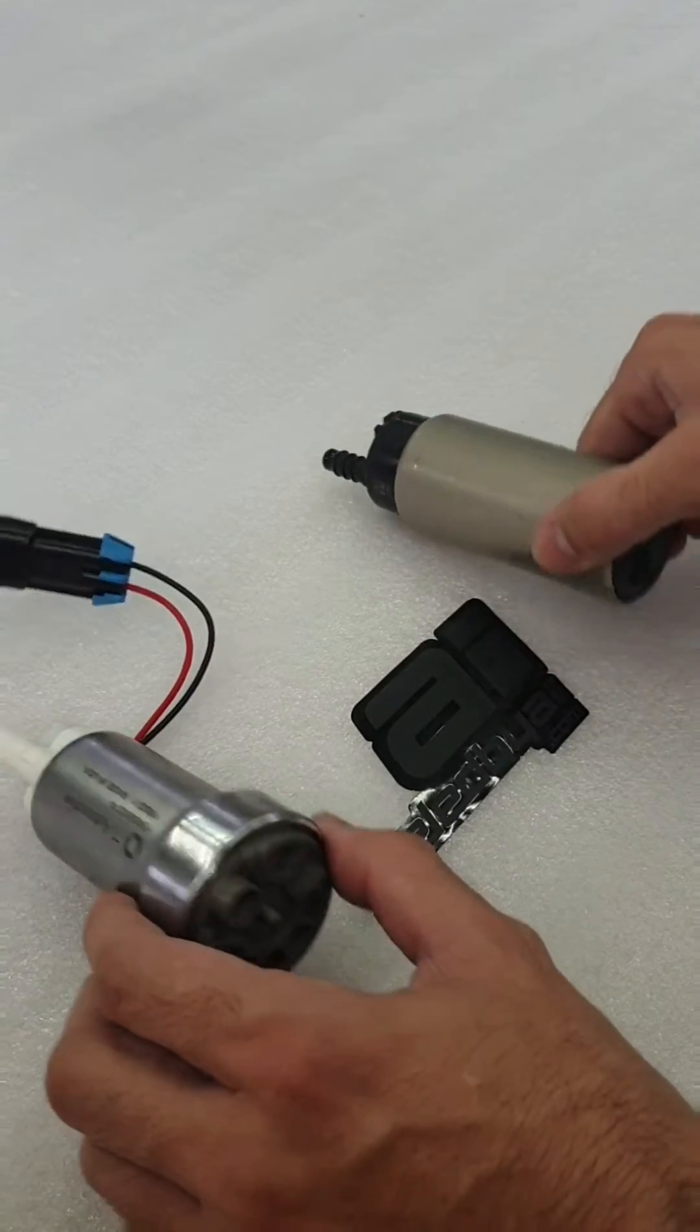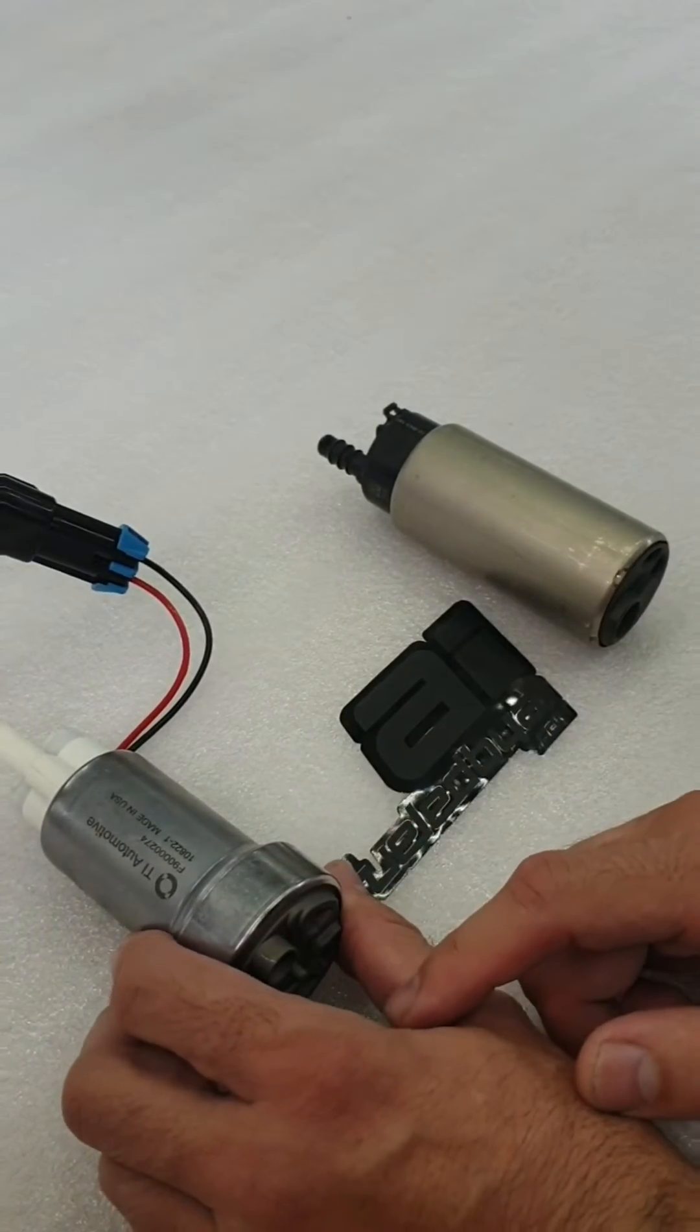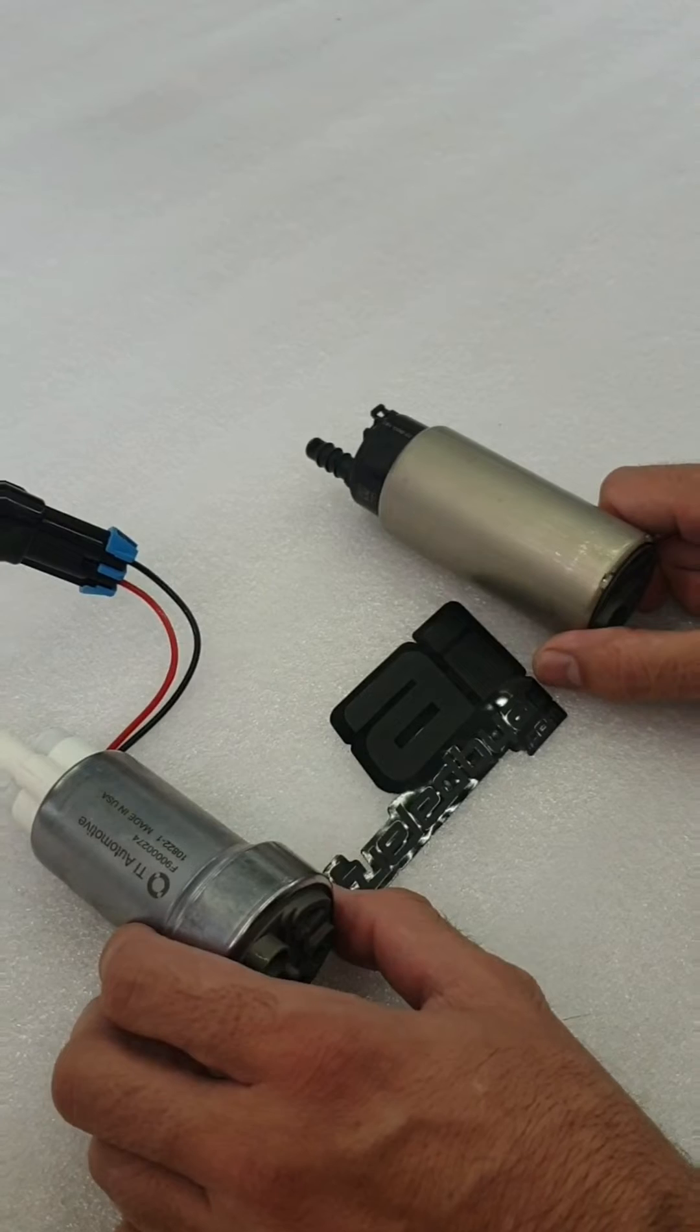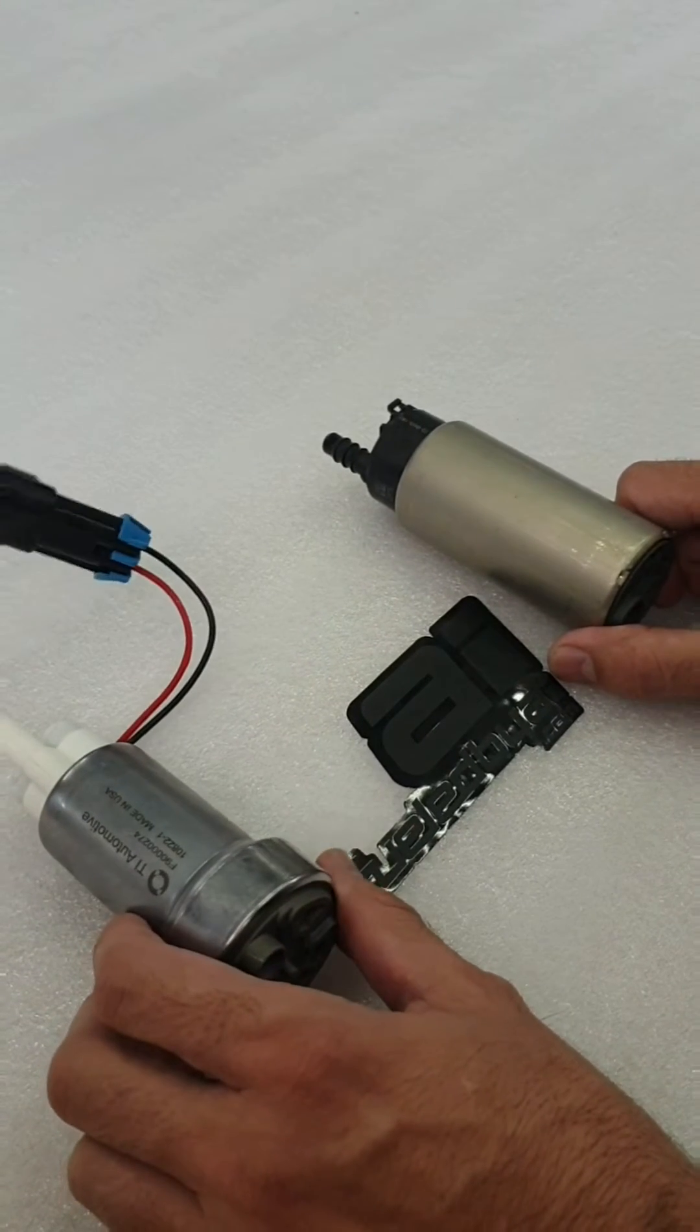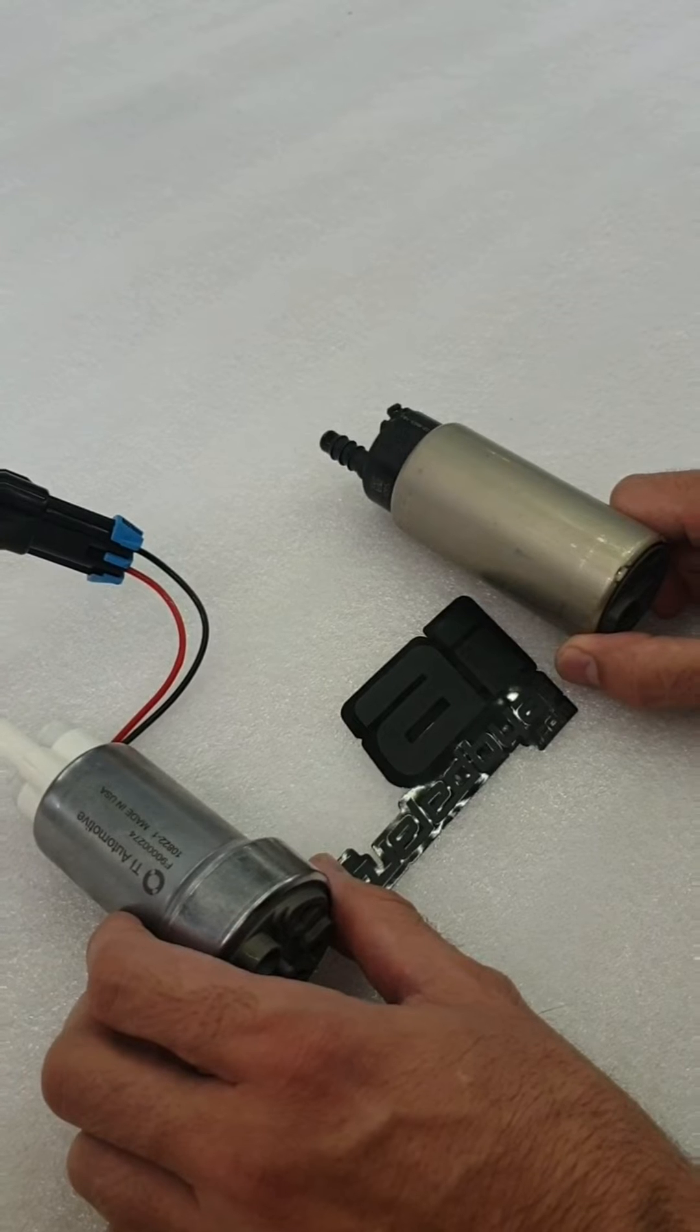No check valve, no check valve, so exactly the same. In terms of current draw, absolutely identical. At 80 PSI, 13.5 volts, the 535 draws 19 amps, the BR540 draws 19 amps or thereabouts.